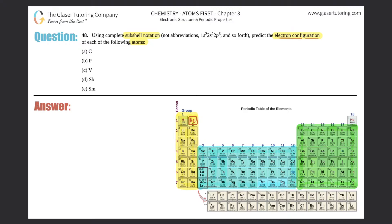If you want, pause the video and highlight the three sections — yellow, blue, and green — on your periodic table if you don't have it marked already. Once you've done that, we'll get started. Let's first work with carbon; we need to write the electron configuration for carbon.